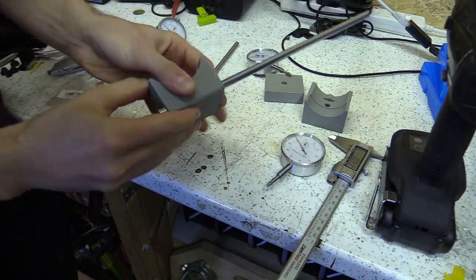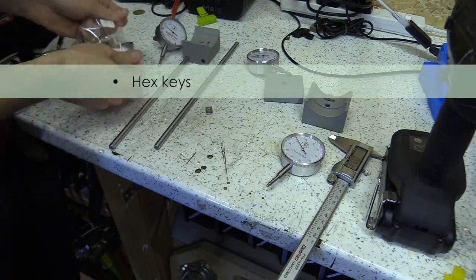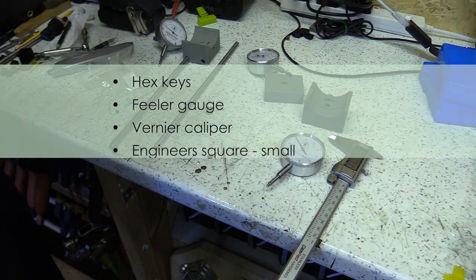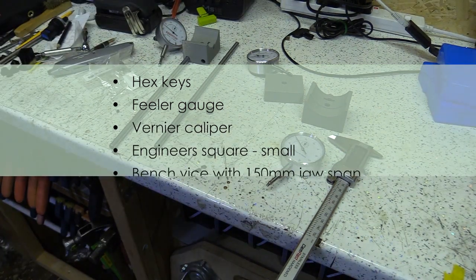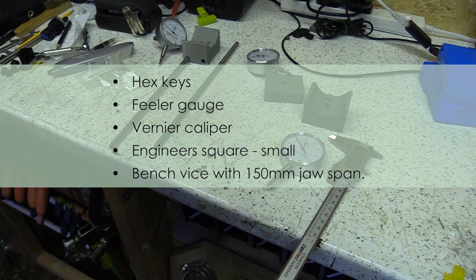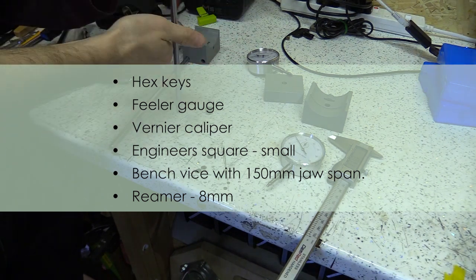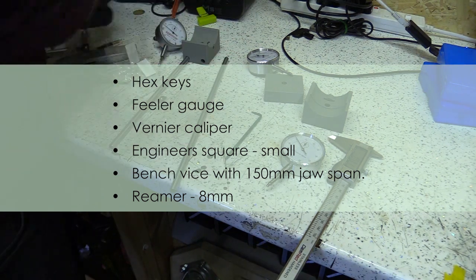The tools you will require are the correct size hex key, a feeler gauge, a vernier caliper, and a small engineer square. You will also need a bench vise, but if you don't have one you can use a parallel clamp. And you may need an 8mm reamer, but that really depends on your 3D printer. Oh, and you need a 3D printer.